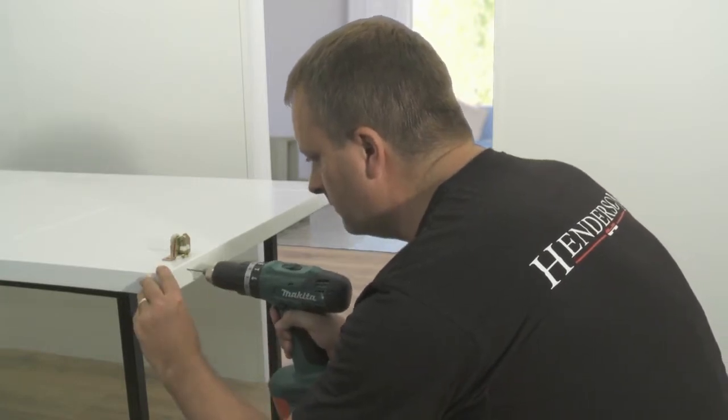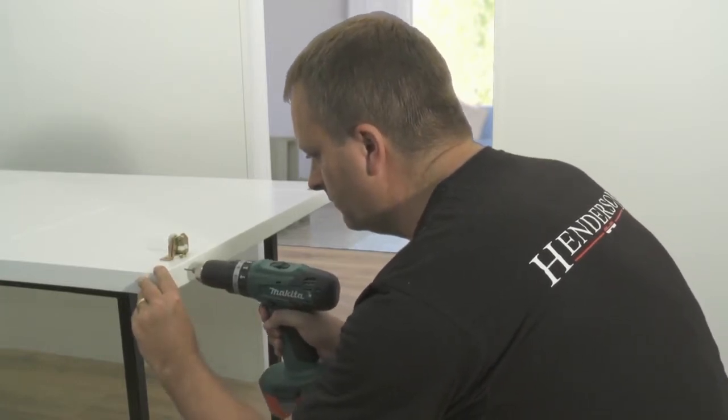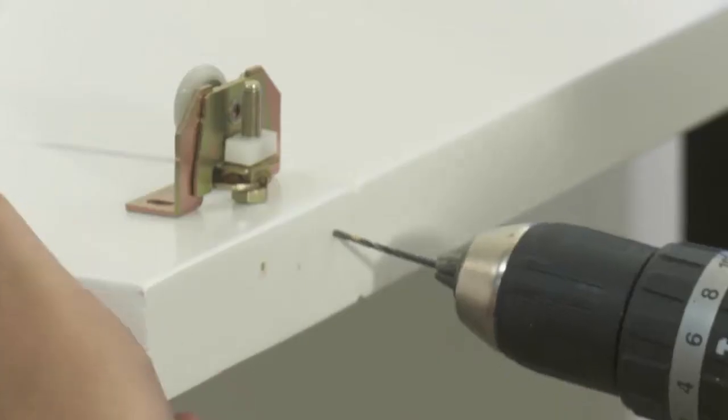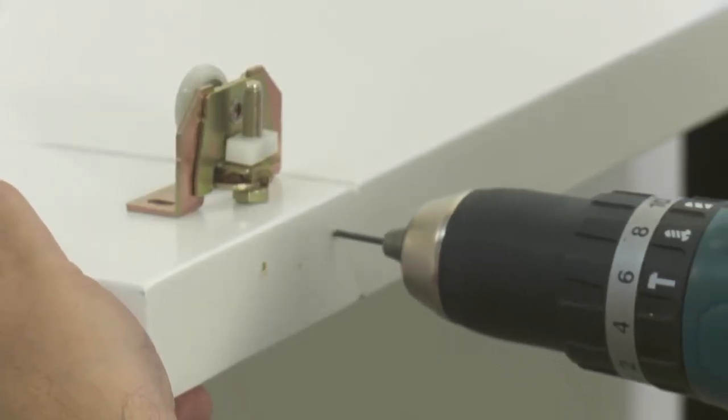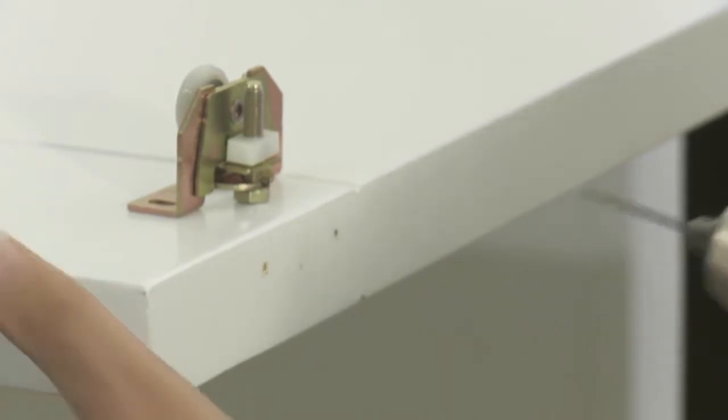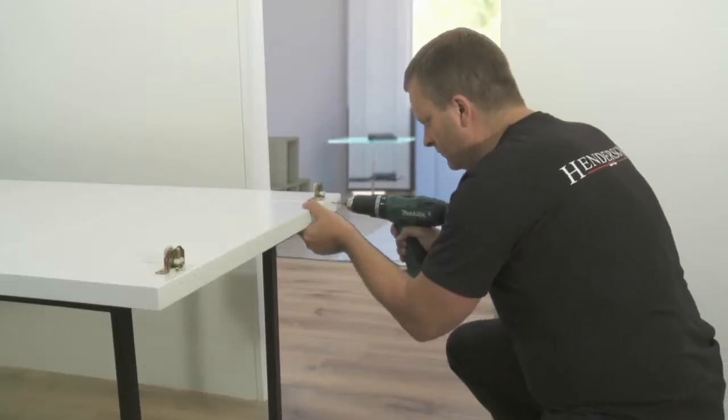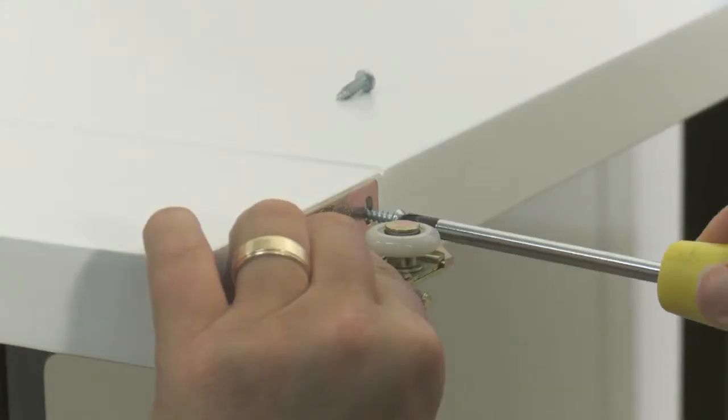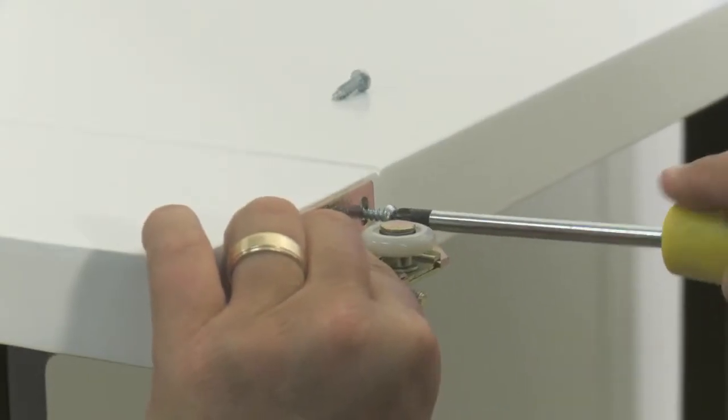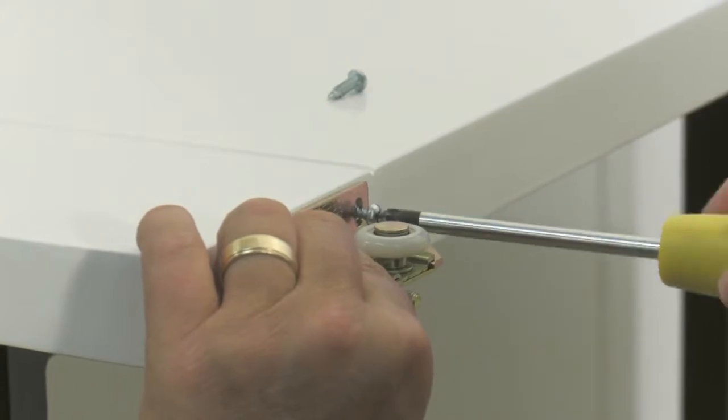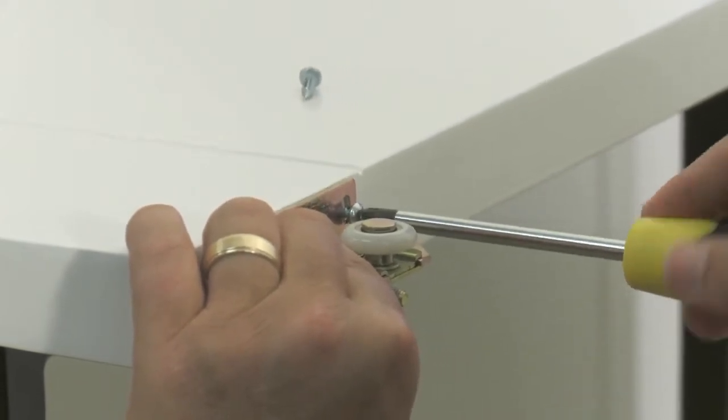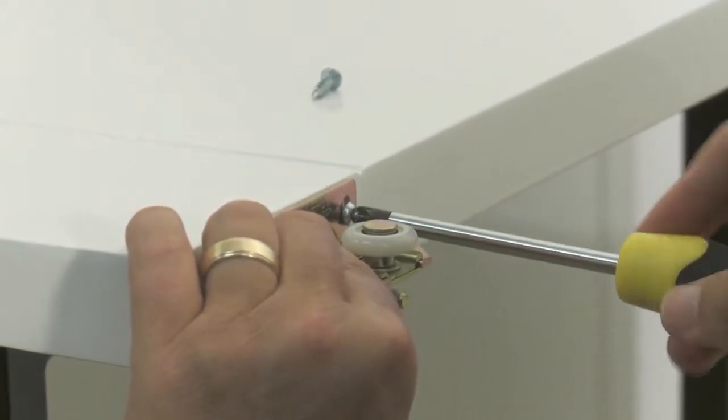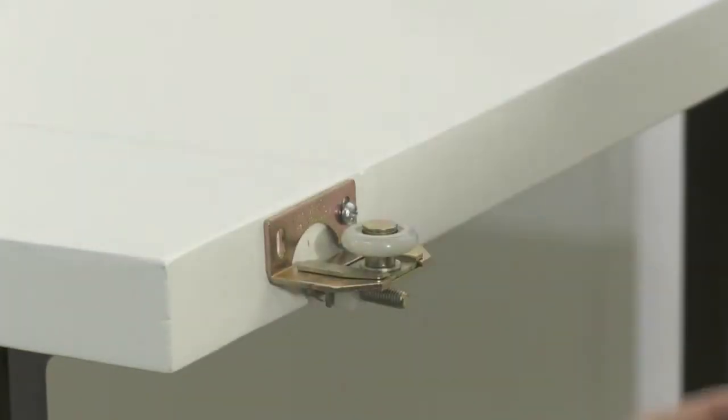Then, using an electric or manual screwdriver, attach the hangers to the door using the screws provided in the kit, ensuring that the wheel is facing the correct way.